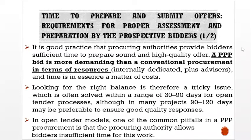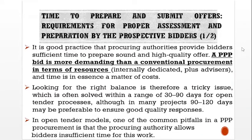Time to prepare and submit offers — requirement for proper assessment and preparation by the prospective bidders. It is good practice that procuring authorities provide bidders sufficient time to prepare sound and high-quality offers. A PPP bid is more demanding than a conventional procurement in terms of resources — internally dedicated to advisors — and time is, in essence, a matter of cost. Looking for the right balance is a tricky issue, which is often solved within a range of 30 to 90 days for open tender processes. In many projects, 90 to 120 days may be preferable to ensure good quality responses. One common pitfall is that the procuring authority allows bidders insufficient time for this work.